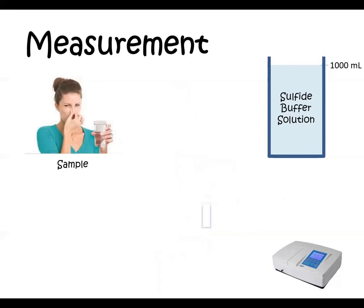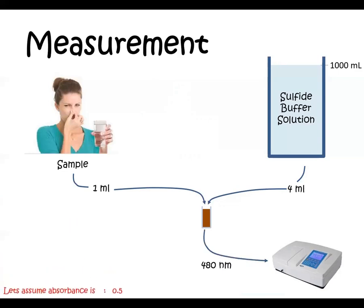Then you can start your measurement of your sample. To do that again, take a test tube and four milliliters of sulfide buffer solution and fill it, and one milliliter of sample. When you add the sample, the color automatically changes to brown as I showed before. Then you can measure at 480 nanometers. Let's assume that your absorbance is 0.5 to make a calculation example.